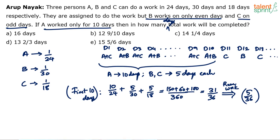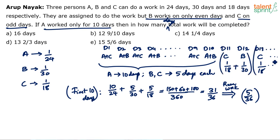From day 11 onwards: on the 11th day (odd), C works and can do 1/18. On the 12th day (even), B works and can do 1/30. On the 13th day, C again does 1/18, and so on. The pattern repeats every two days — C then B — doing 1/18 + 1/30 per two-day cycle.